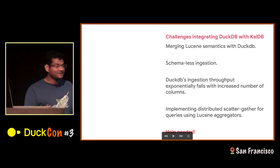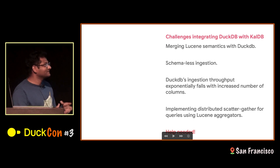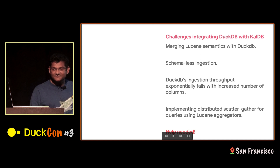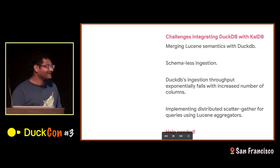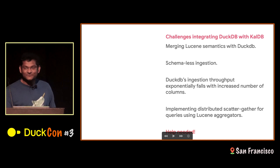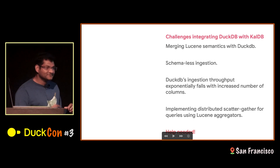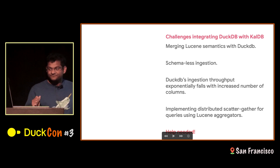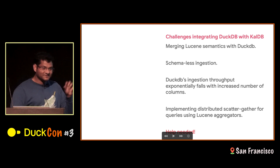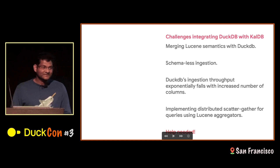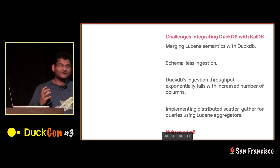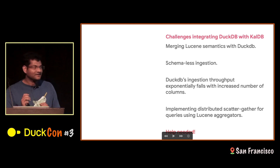Currently, this is probably one of the most immature talks this evening — we are still early. As we are implementing this, we have run into a few challenges. I thought this would take a week, but once I started doing it, I ran into a lot of issues. One of the issues is mapping the semantics between Lucene and DuckDB was a challenge. There were things that Lucene does better and things that columnar stores do better. The other thing is schemaless ingestion — logs by nature have no schema and don't conform to any schema, but DuckDB needs a strict schema. So mapping logs into a flexible schema for DuckDB was another challenge.